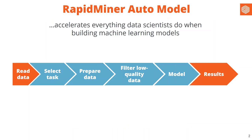RapidMiner AutoModel is built to really accelerate everything we do as data scientists whenever we build machine learning models. Of course, sometimes we do just some data preparation, and sometimes a data scientist still prepares data for a BI-style report or some pie chart. But here, the whole focus obviously is on machine learning itself. And as you can see, we followed a kind of well-understood process here.